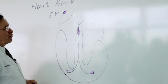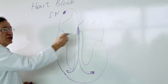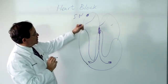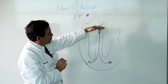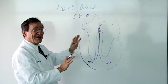Heart block refers to abnormality of this electrical bridge such that impulses that originate from the upper chambers can't get down to the lower chamber in a normal fashion.